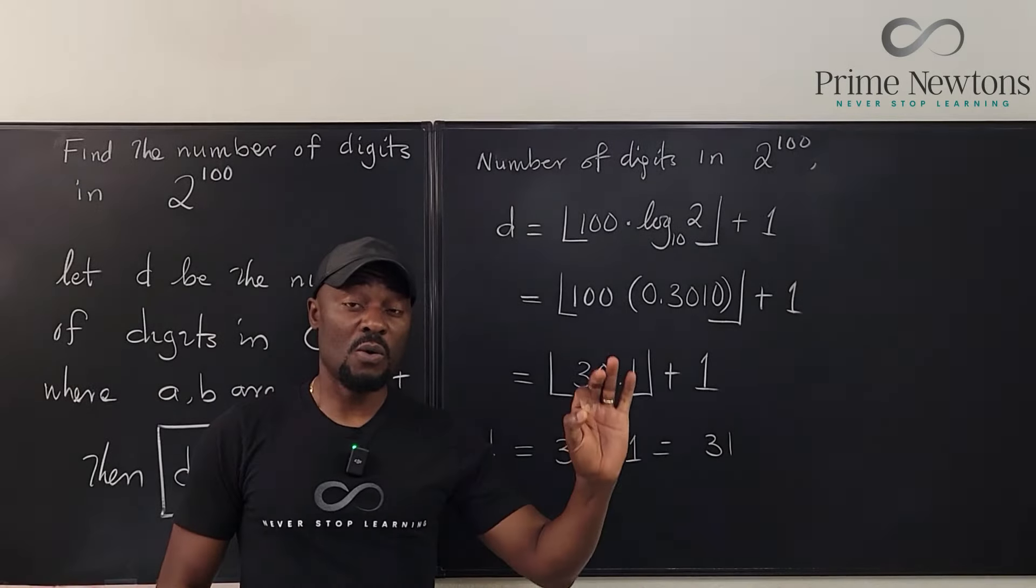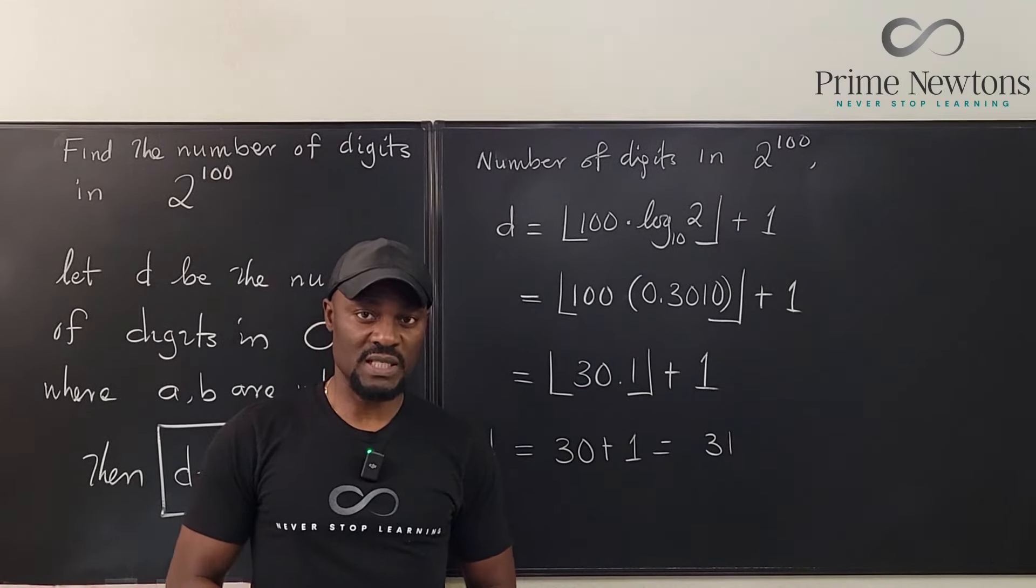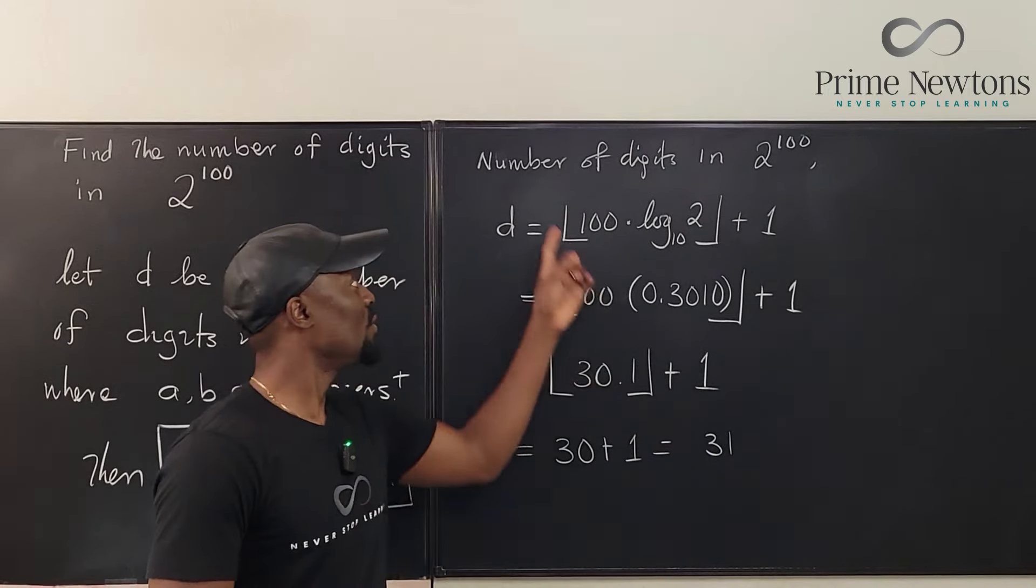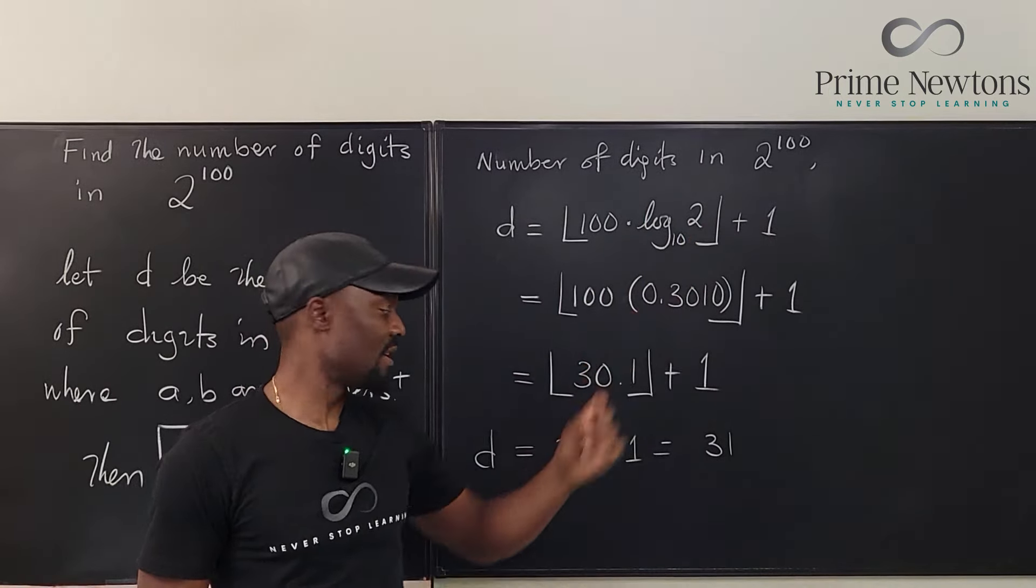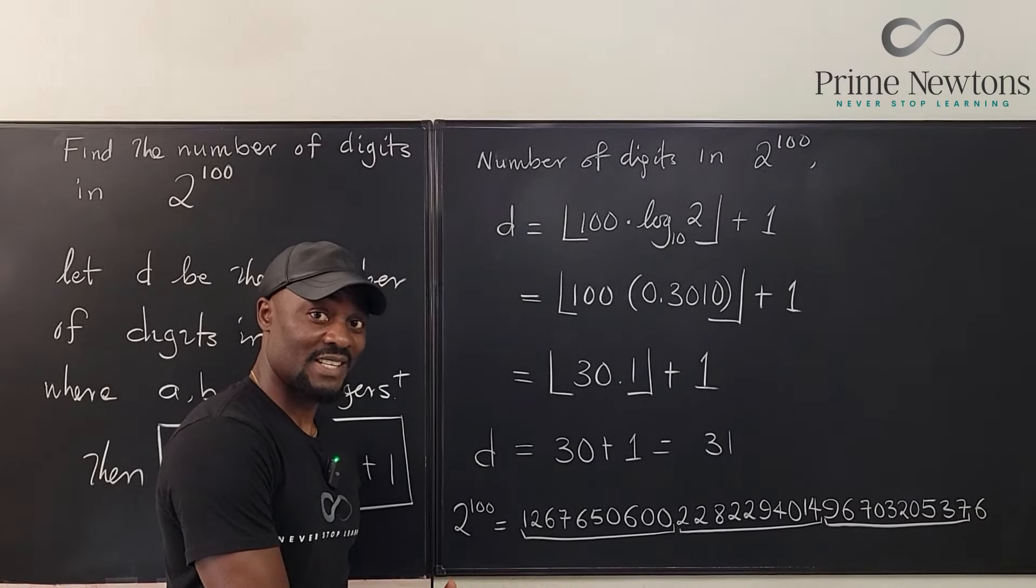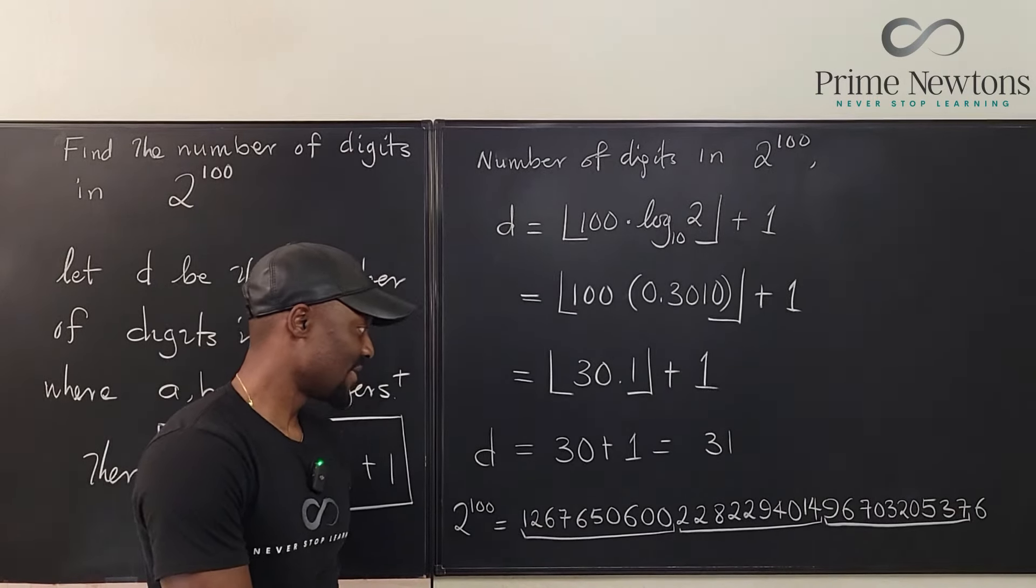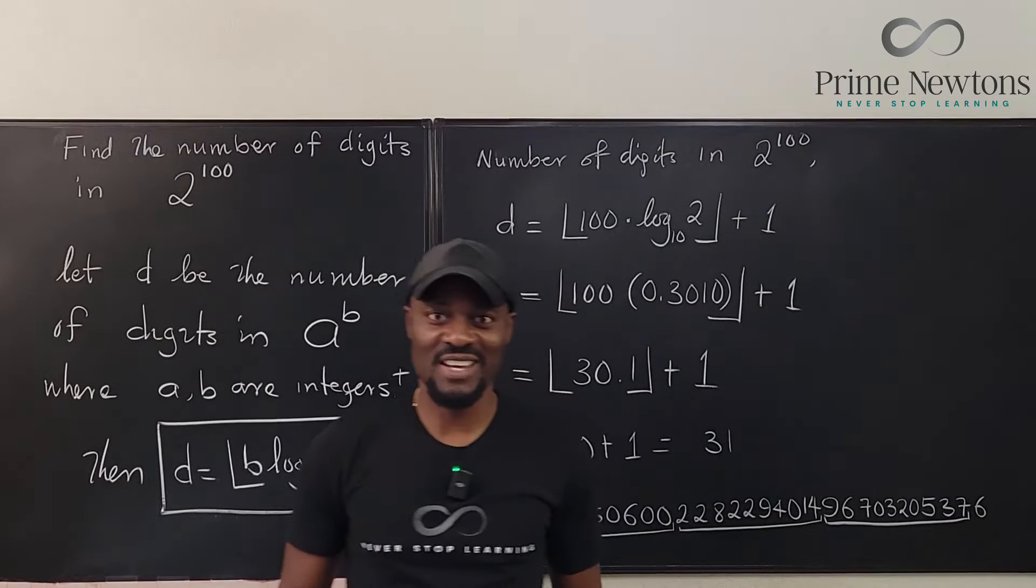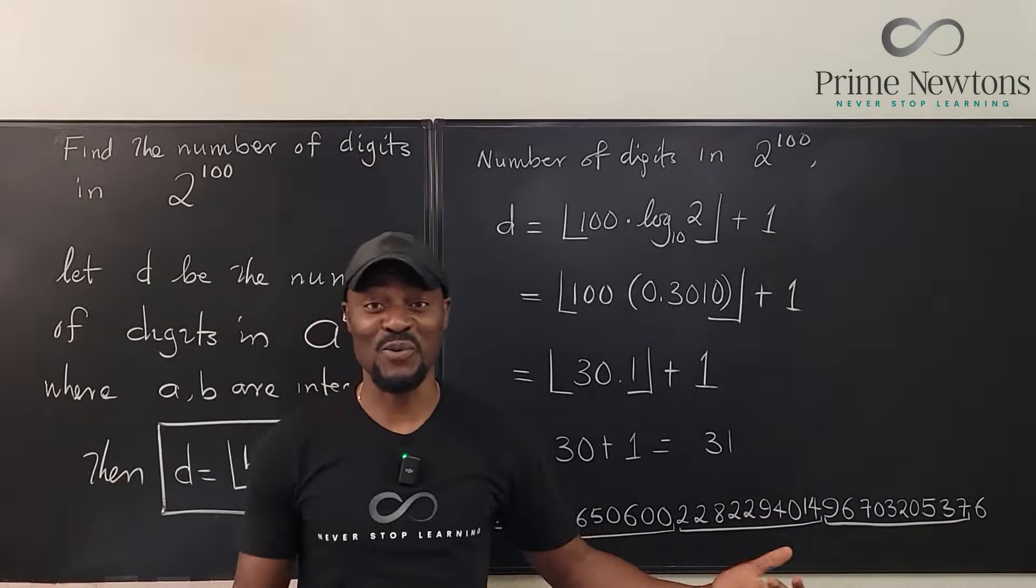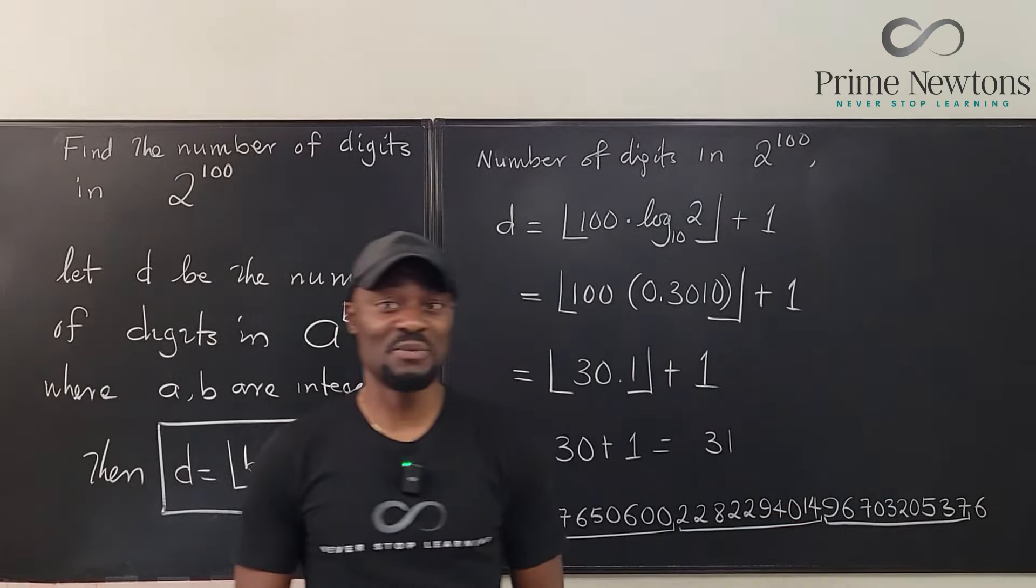That's it. So 2 raised to the power of 100 has 31 digits. And if you really want to see what 2 raised to the power of 100 looks like, let me write it here. These are the digits of 2 to the 100. 31 digits. The last digit is 6. That's another test question. What is the last digit of 2 raised to power 100? Now you see that it's going to be 6.